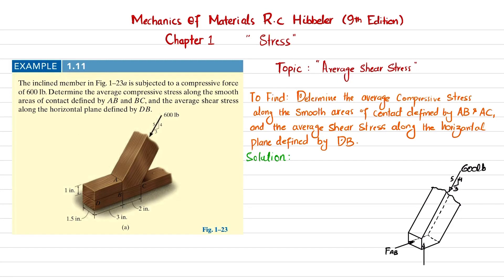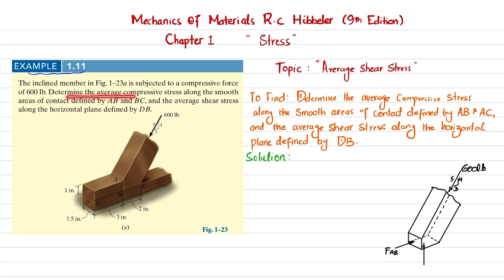Welcome back. In this video we are going to solve example 1.11 taken from chapter 1, Stress, from the book Mechanics of Materials by R.C. Hibbeler, 9th edition. The topic is average shear stress. The statement is: the inclined member in figure 1-23A is subjected to a compressive force of 600 pounds. Determine the average compressive stress along the smooth area of contact defined by AB and BC, and the average shear stress along the horizontal plane defined by DB.